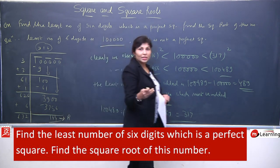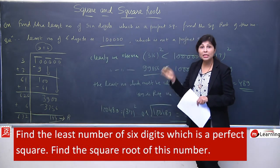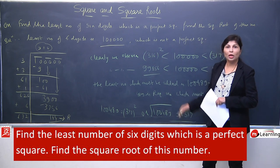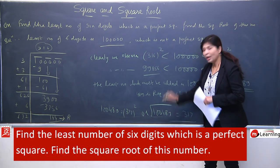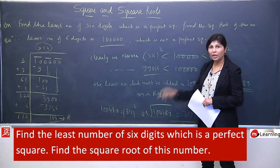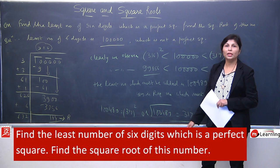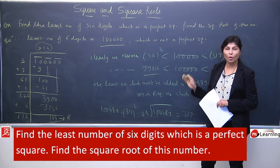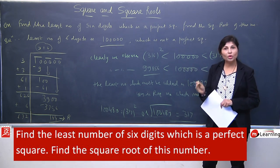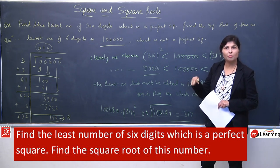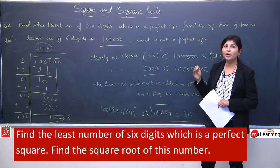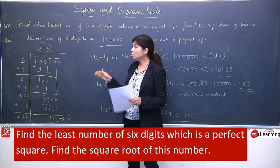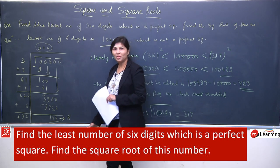So aapka question tha: six digit ka sabse pehla (least) number pata kariye jo perfect square hota hai — woh hai 100489. Iske baad bahut saare aayenge, but pehla jo hota hai starting from one lakh — first number jo perfect square hai woh 100489 hai. Again repeating: least four-digit, greatest four-digit, least six-digit, greatest six-digit — ye wale patterns exam mein definitely aate hain. Inko bahut practice karna hai — jo bhi le rahe hain unko dhyan se samajhne ki koshish kariye.